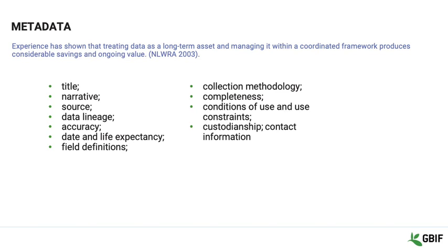Statement of accuracy: using the concepts of accuracy, precision, errors, and uncertainty that we discussed previously, are there any issues with the datasets that should be known to your user? Dates and life expectancy: when will the dataset be available? How long is it valid for? When, if ever, will it be updated? Field definitions: describing the format of fields and what kind of data each contains. Was any cleaning or transformation done to the original data? This is important to know if you are mapping it to a standard such as Darwin Core.